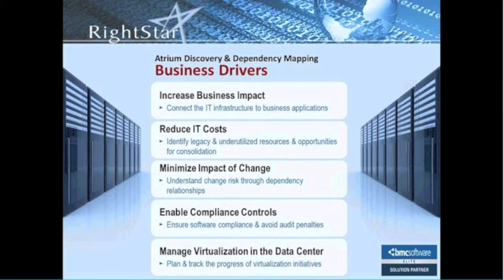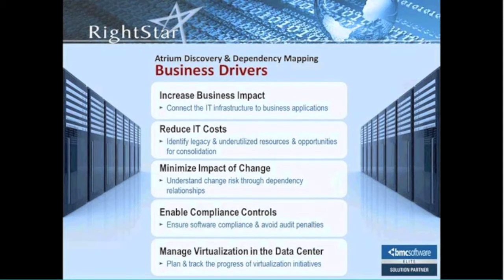The fourth driver is enabling compliance controls. Companies sometimes get audited on the software running in their environment. With Atrium Discovery, there's no agent involved, so I can quickly scan my environment and see what software exists on the machines. I can then reconcile that information to the CMDB where I have my contractual information. For example, if we have 1,000 copies of Office, I do my Discovery and see 900 installed — we're in compliance. If you're over-licensed, you'll know to take action to get back in compliance.